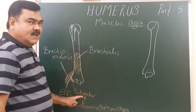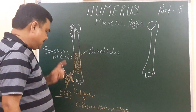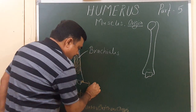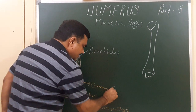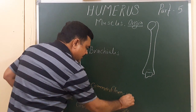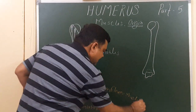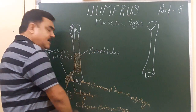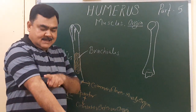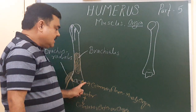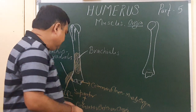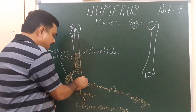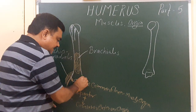Here, the supinator and superficial extensor muscles are attached. On the medial side, here is the medial epicondyle, where the superficial flexor muscles of the forearm are attached. This point is known as the common flexor origin.